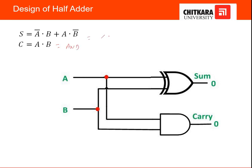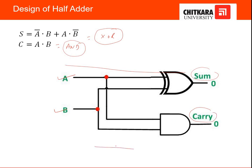To design the half adder circuit, we require two basic gates: an XOR gate and an AND gate. Two inputs A and B are given to the XOR gate to produce the sum output, and the same two inputs A and B are given to the AND gate to produce the carry output. This combinational logic circuit is the complete design for the half adder.